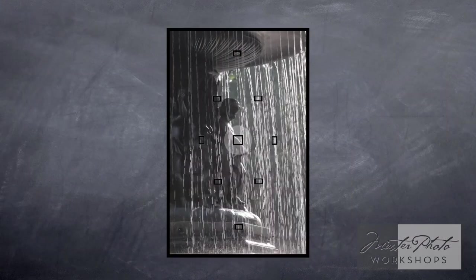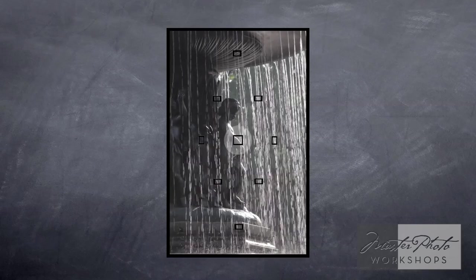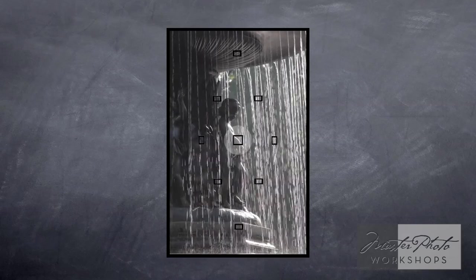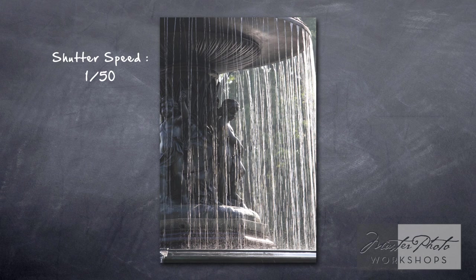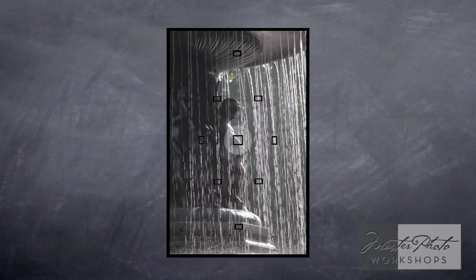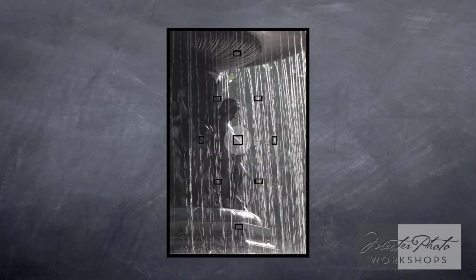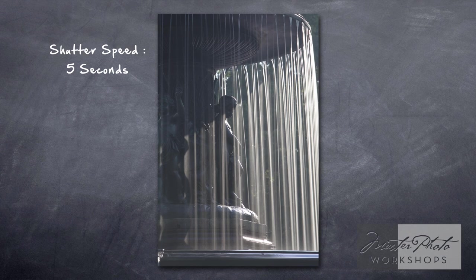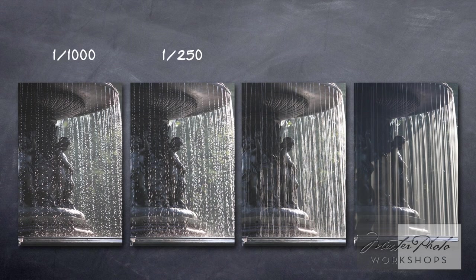Now we're going to stop this down and shoot at a fiftieth of a second. You can see we're starting to get even longer streaks of water — they're actually starting to blend into actual streaks instead of just elongated blips or dots. Now we're going to do a five-second exposure, and you can see those streaks of water are now just silky ribbons. From a thousandth to a two-fiftieth to a fiftieth to five seconds, we can see how dramatically shutter speed changes our images.